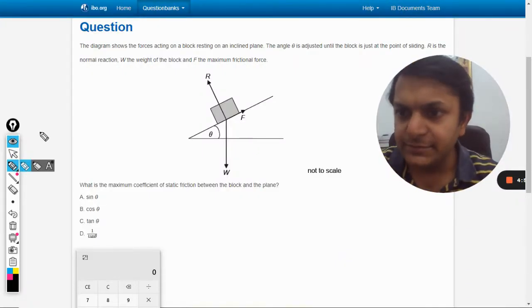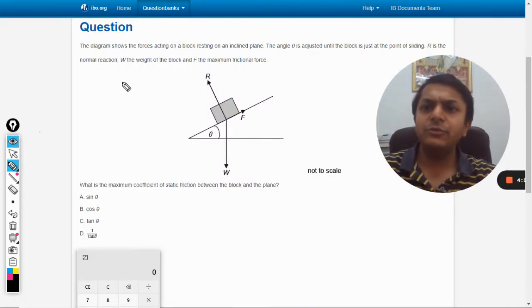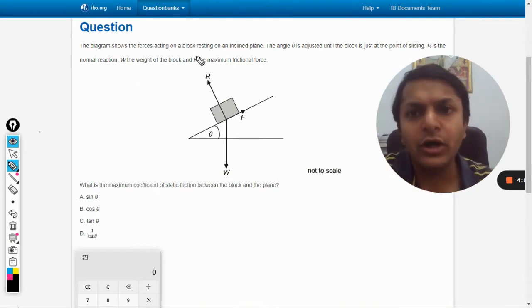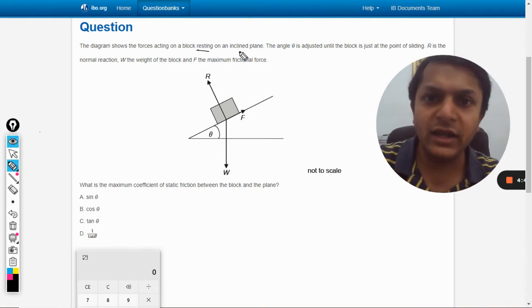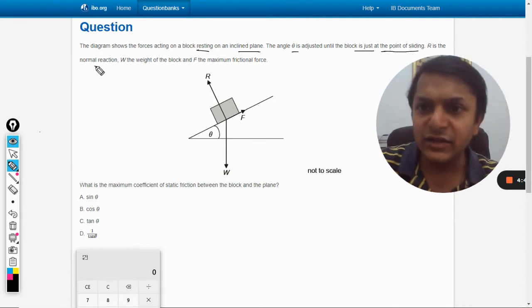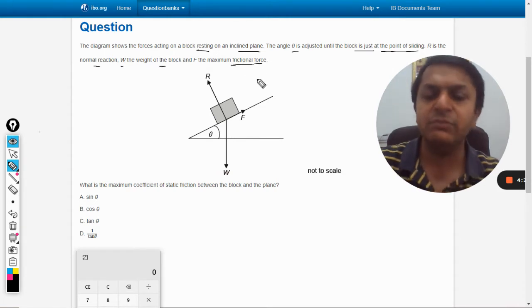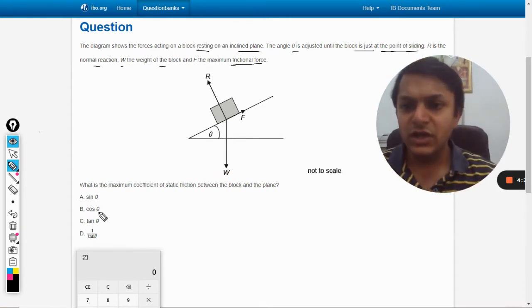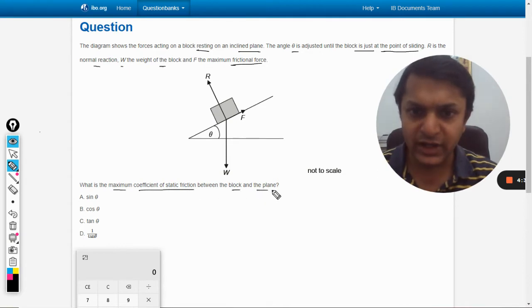In this question, the diagram shows the forces acting on a block resting on an inclined plane. The angle theta is adjusted until the block is just at the point of sliding. R is the normal reaction, W is the weight, F is the maximum frictional force. What is the maximum coefficient of static friction between the block and the plane?